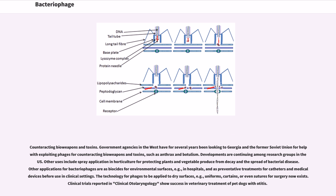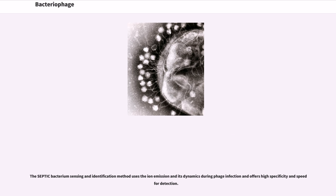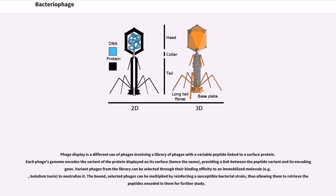Other uses include spray application in horticulture for protecting plants and vegetable produce from decay and the spread of bacterial disease. Other applications include use as biocides for environmental surfaces such as in hospitals, and as preventative treatments for catheters and medical devices before use in clinical settings. The technology for phages to be applied to dry surfaces — for example, uniforms, curtains, or even sutures for surgery — now exists. Phage display is a different use of phages involving a library of phages with a variable peptide linked to a surface protein, providing a link between the peptide variant and its encoding gene.